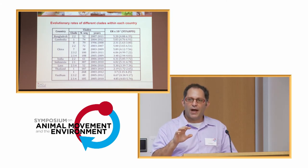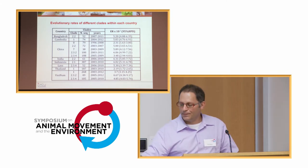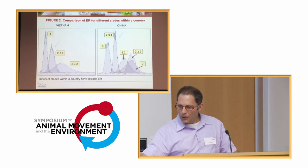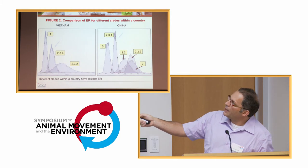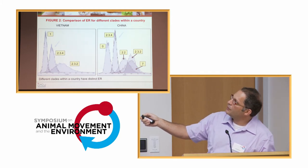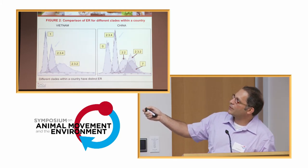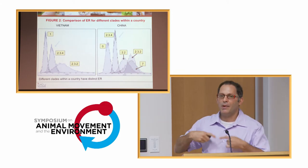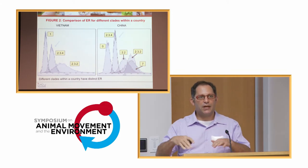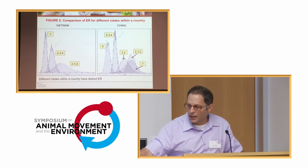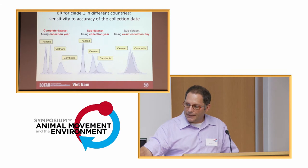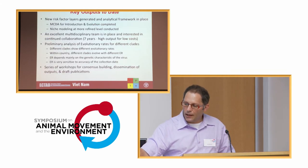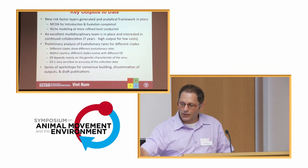For example, clade 2.3.4 in Vietnam is doing different things than clade 2.3.4 in China. What are the differences between China and Vietnam that promote those differences in the evolutionary rate of viruses? This is the area that we're trying to go into.